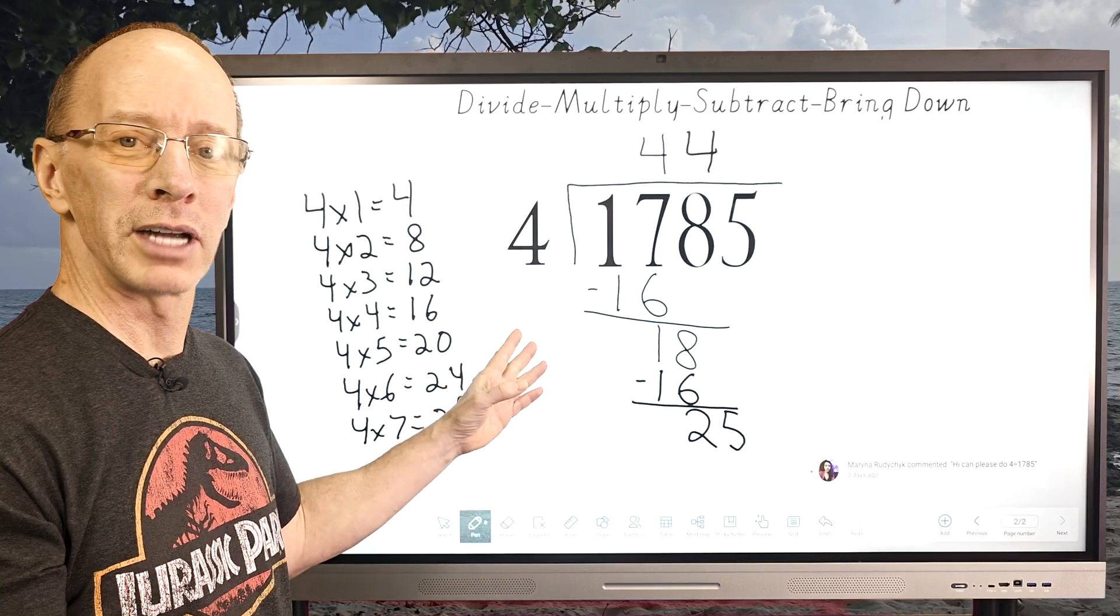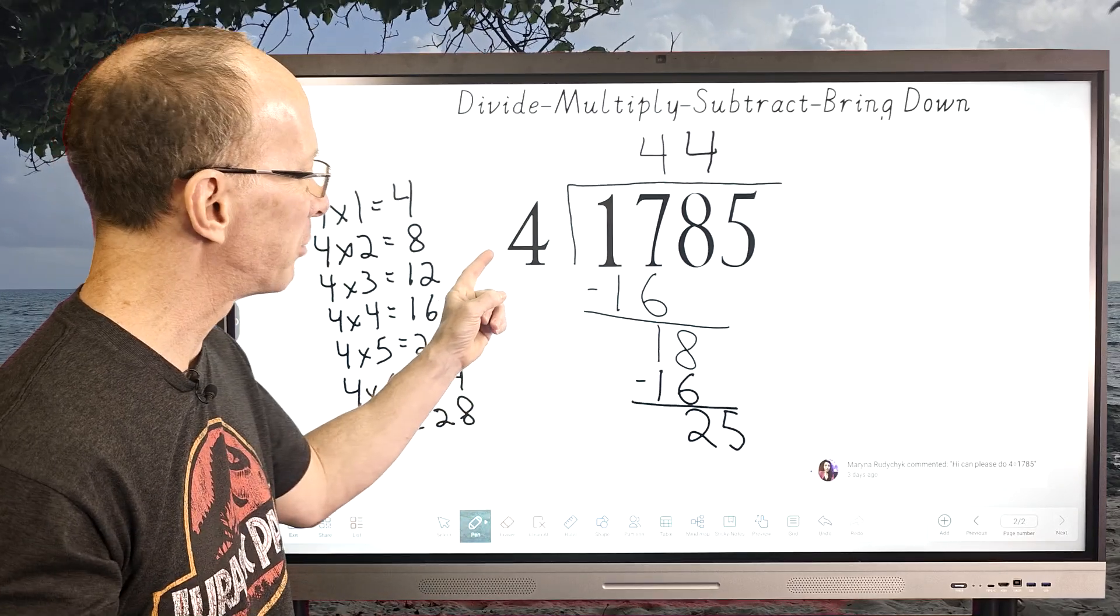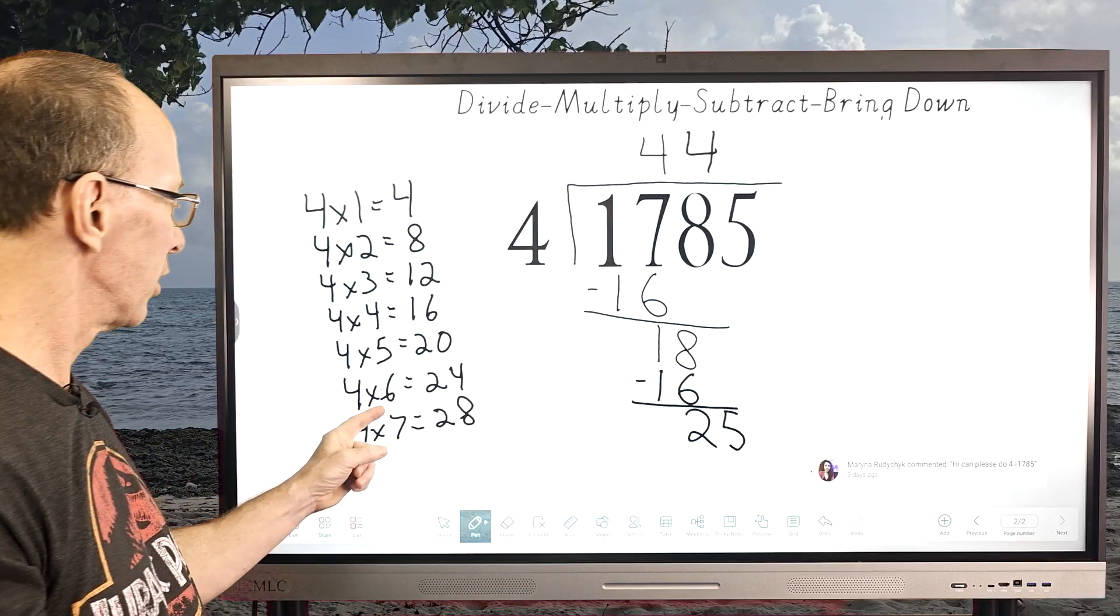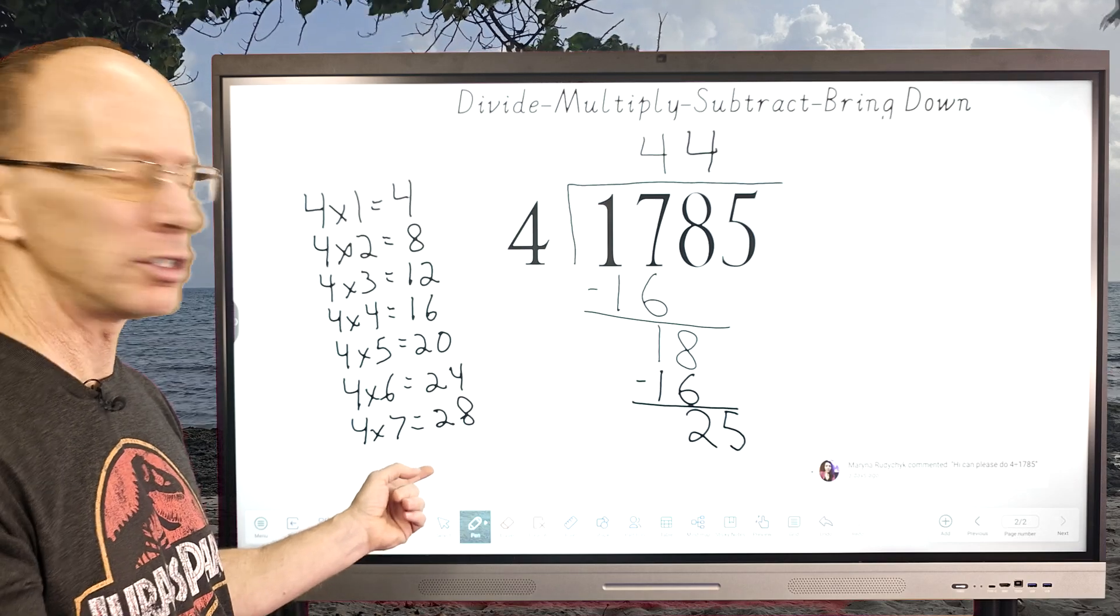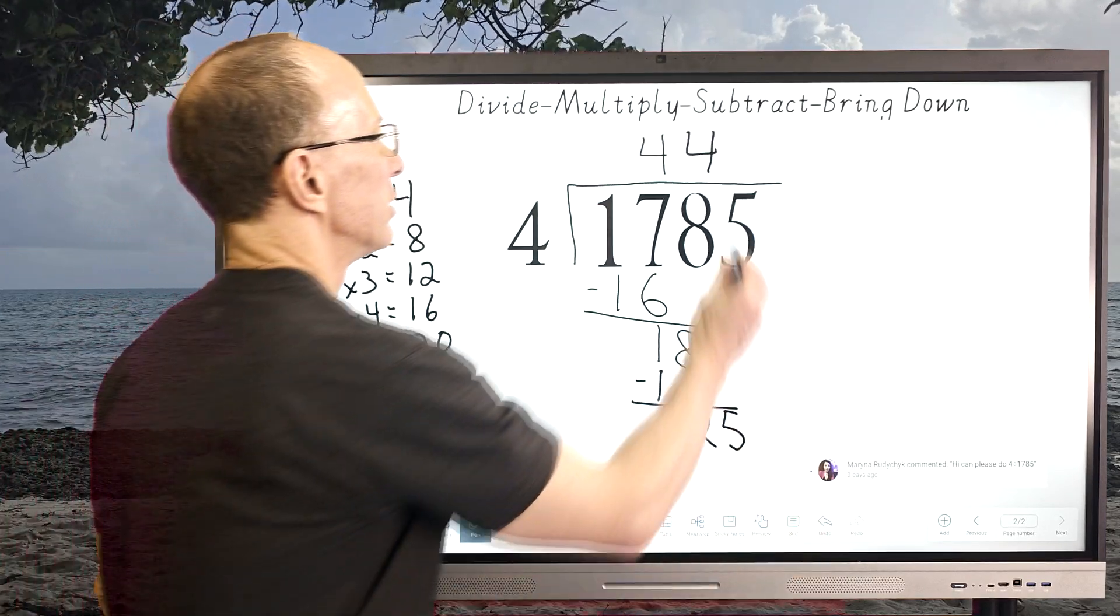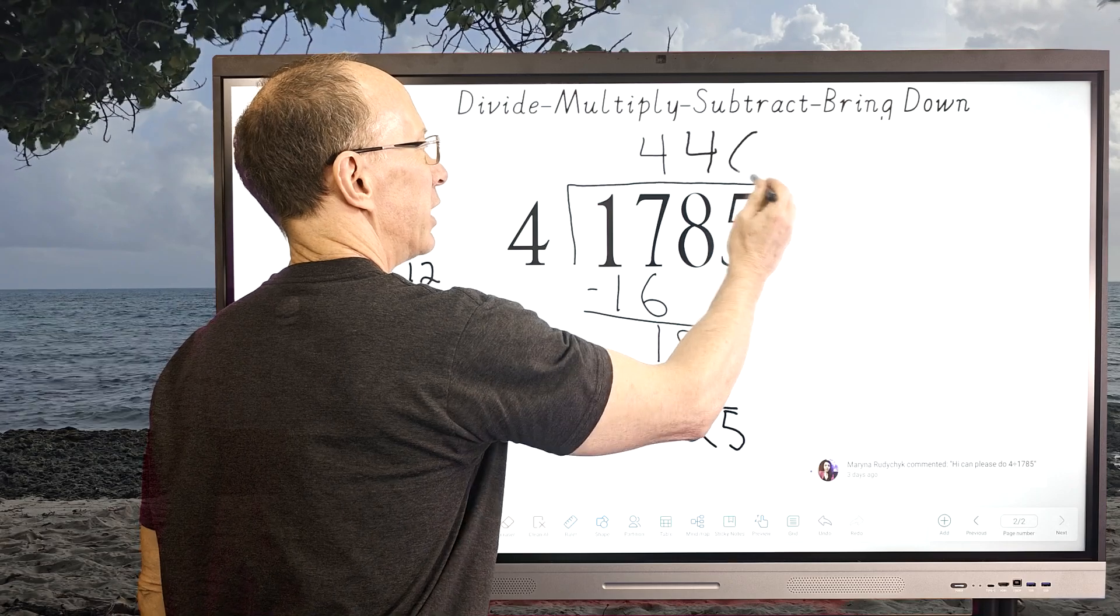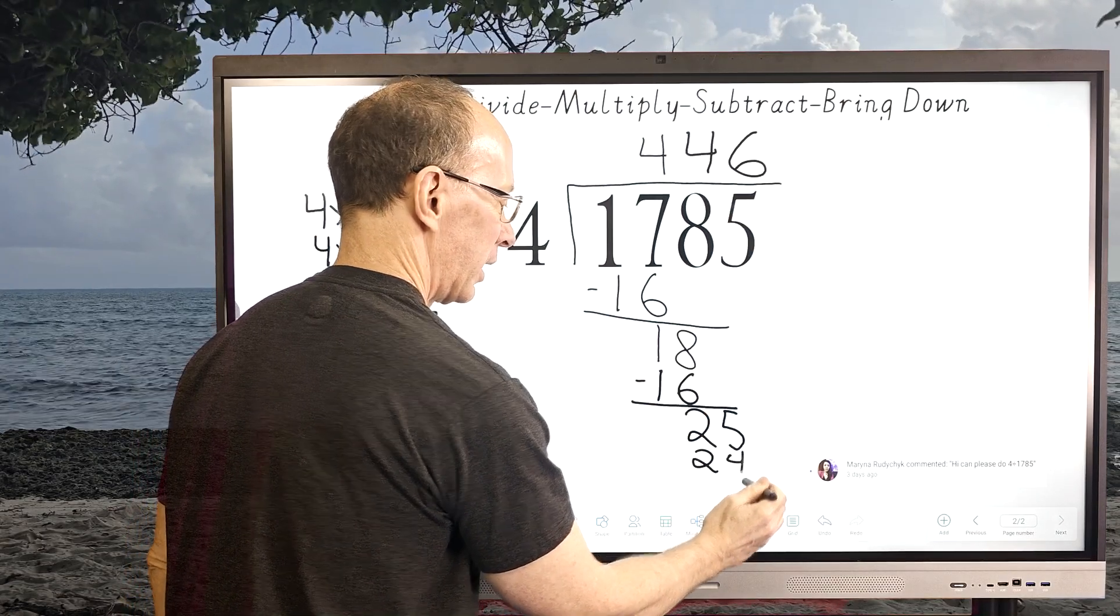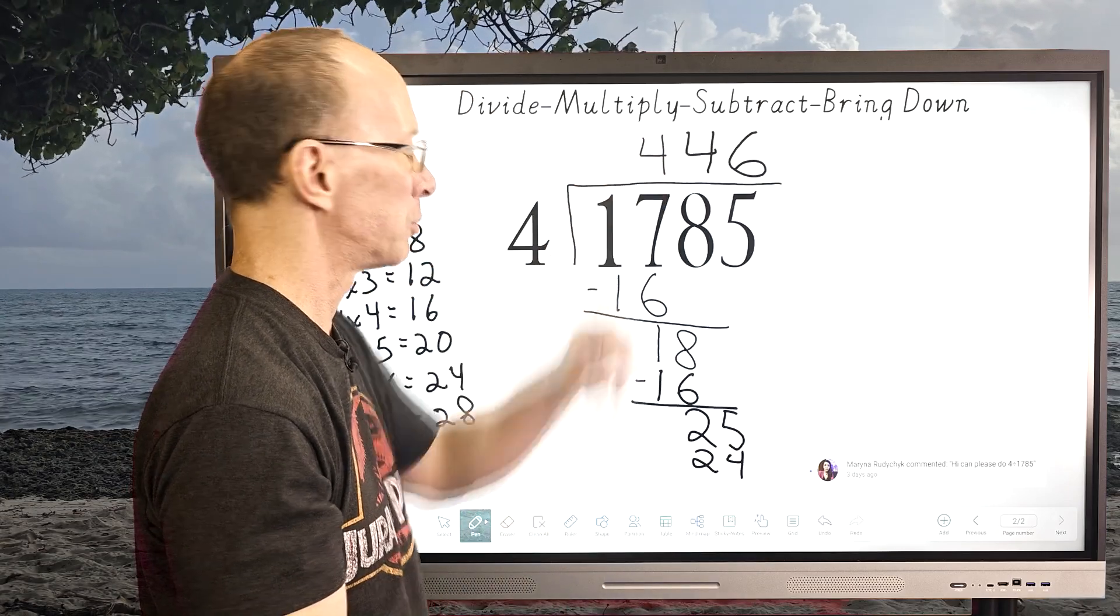Now we start the whole process over again. How many times can I put 4 into 25? What do we got here? 4 times 7 is 28, that's too big. Let's go with 4 times 6. So I'm going to go ahead and put 6 right here, and then 6 times 4 equals 24, and then I subtract.